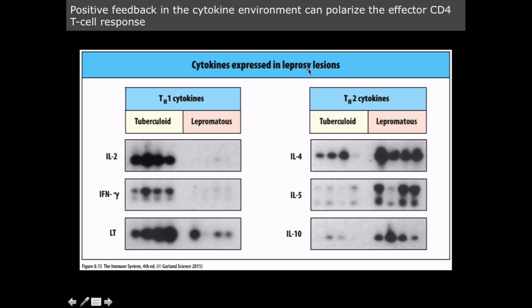An example of this is leprosy, caused by Mycobacterium leprae. Whenever you hear 'mycobacterium,' think highly resistant to phagocytosis by macrophages — so which helper T cell type fights intracellular infections? About 95% of people on Earth are actually resistant to infection by it, which is why it has such a long incubation period — up to 20 years in some cases. In patients with a Th1 bias or polarization, the cytokines produced help infected macrophages suppress bacterial growth by increasing oxygen radicals, superoxide, and nitric oxide. The infection remains well localized, and patients usually won't die from it.